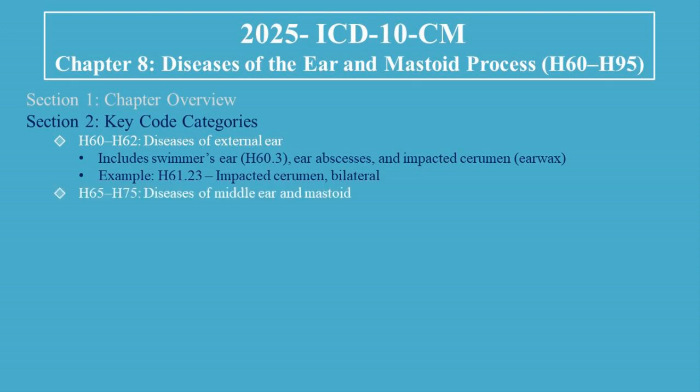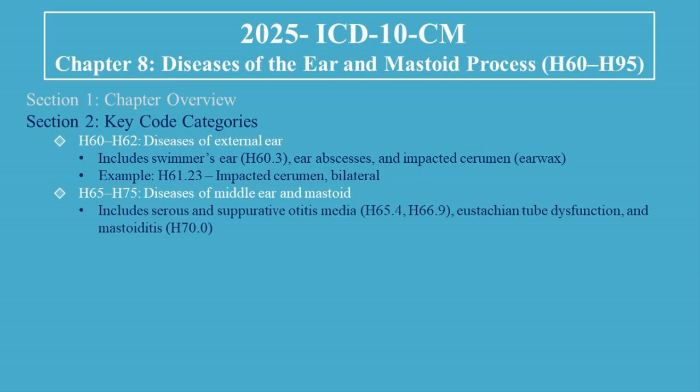H65 to H75 covers diseases of the middle ear and mastoid. This includes serous and suppurative otitis media (H65.4, H66.9), Eustachian tube dysfunction, and mastoiditis (H70.0). Example: H66.91, Otitis Media, Unspecified, Right Ear.